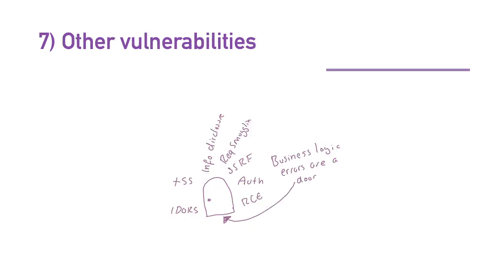Business logic errors are often a door to other vulnerabilities — things like IDORs, cross-site scripting, information disclosure, request smuggling, SSRFs, authentication issues, and RCEs. Business logic provides this kind of doorway. So don't just stop at the business logic bug. See what else you can do with it — see how far you can push a bug and then report it. That's guaranteed not just to get you a bug, but also to get you higher bounties. You can get what would be a medium bug triaged as a high by just following simple steps.